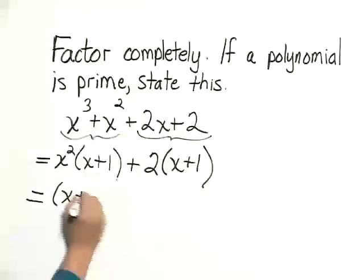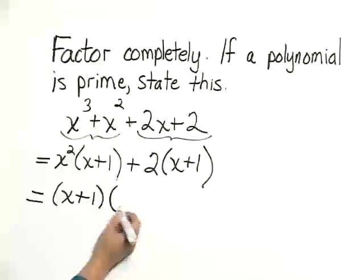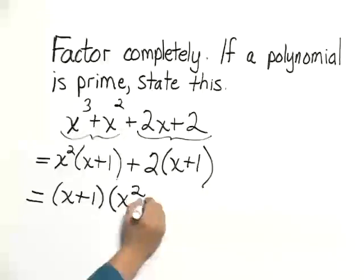We factor the binomial and write it as x plus 1, parenthesis, and then we write the x squared plus the 2.